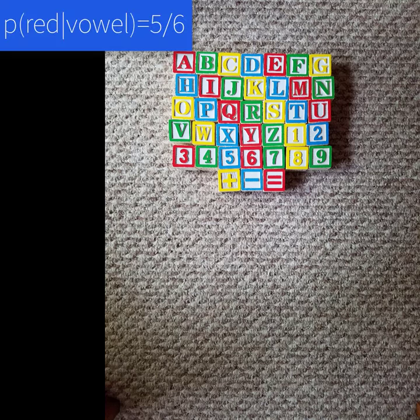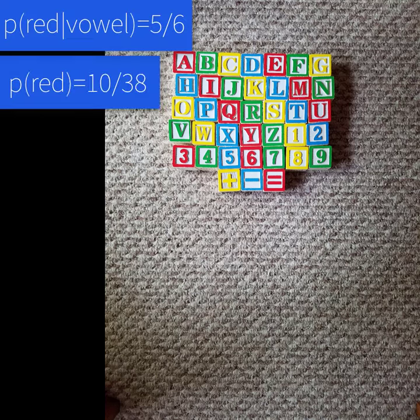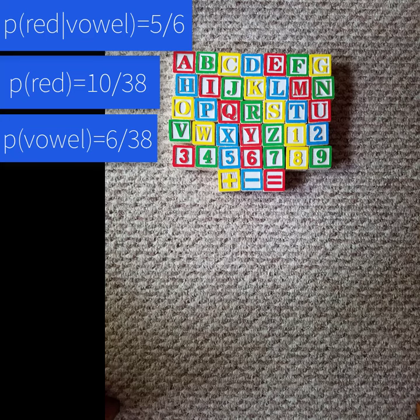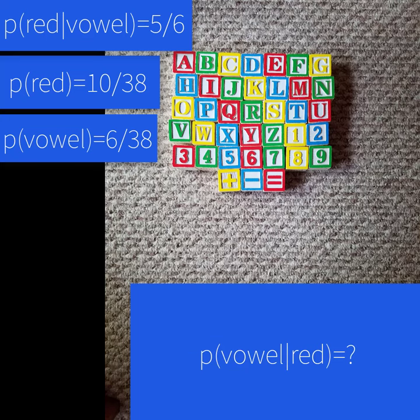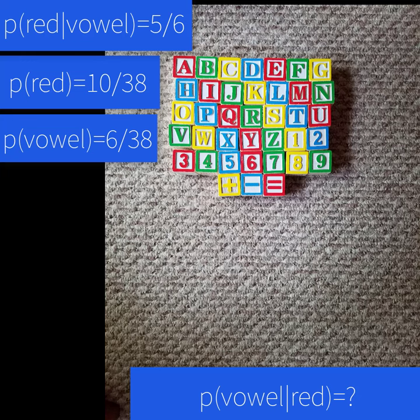It turns out that if you know the probability of red given a vowel, the probability of red, and the probability of a vowel, you can flip that conditioning around and find the probability of a vowel given red using Bayes' rule.